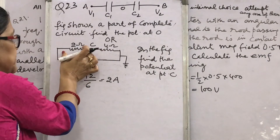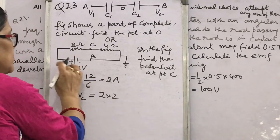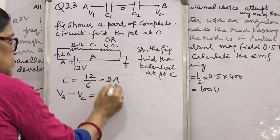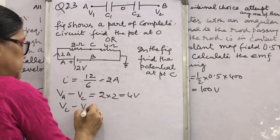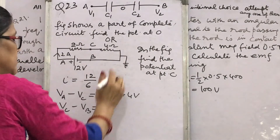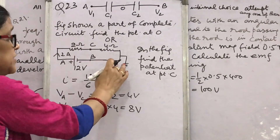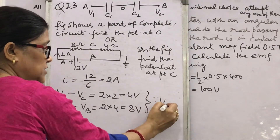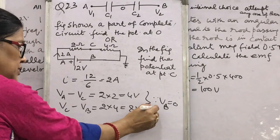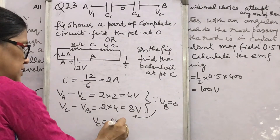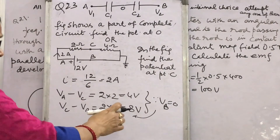VA − VC = 2 ampere × 2 ohm = 4 volt. For VC − VB = 2 ampere × 4 ohm = 8 volt. Since the point B is earthed, VB = 0. Putting VB = 0 in the expression, VC = 8 volt. In this way you have to solve the question to get the potential at C.